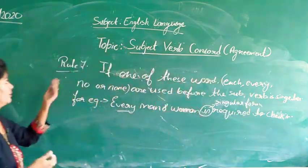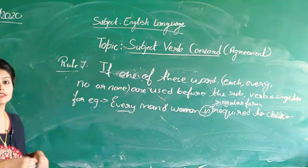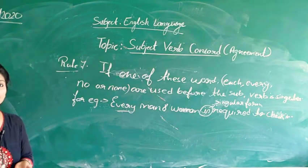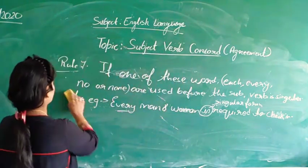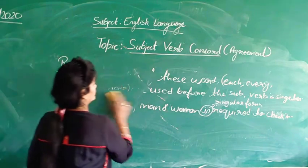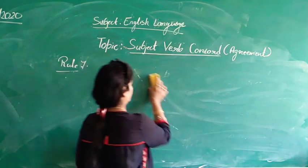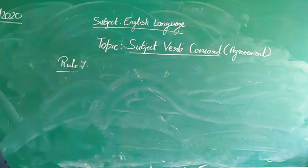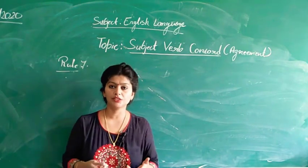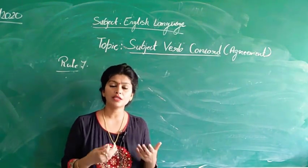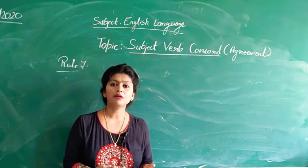This is what rule number 7 says — if we are using such words. Now let's look at rule number 8. Rule number 8 says: if we are using compound connectors or compound conjunctions along with singular subjects, then again our verb will be singular.